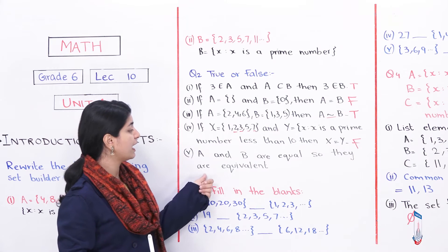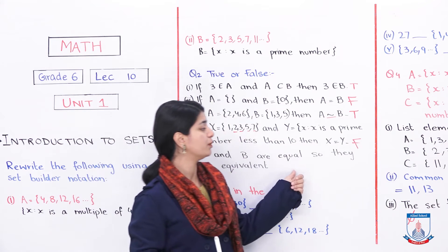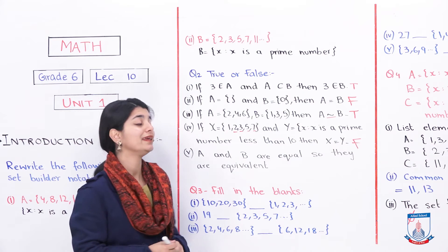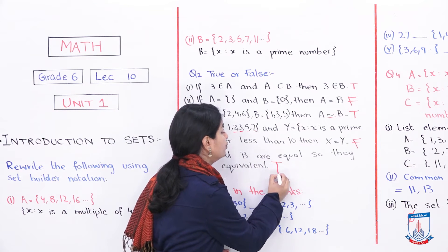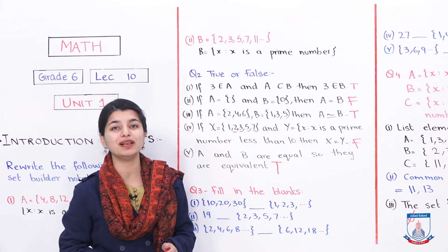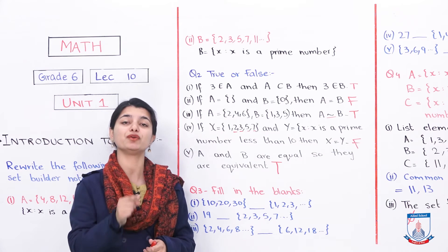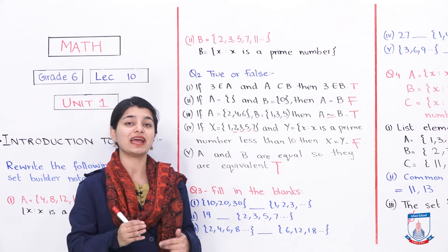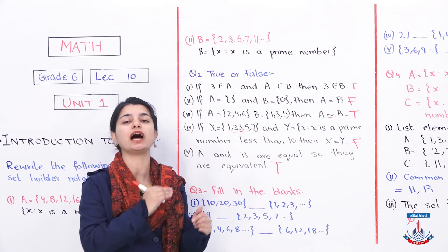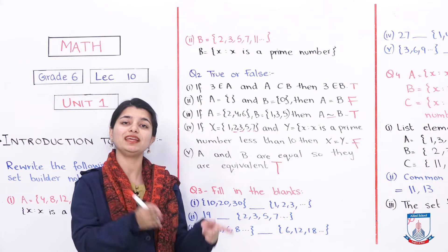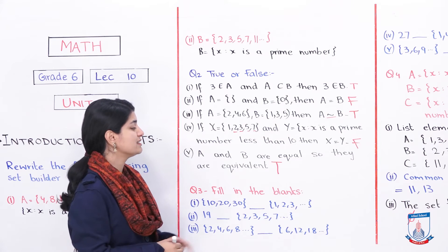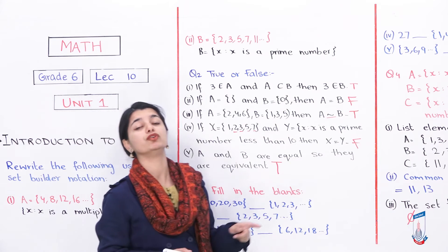Fifth statement: if A and B are equal sets, then they are also equivalent. Is this true? Yes, 100%. Because if two sets are equal, they have exactly the same elements, which means they also have the same number of elements. Equal sets are always equivalent. Therefore, this statement is true.